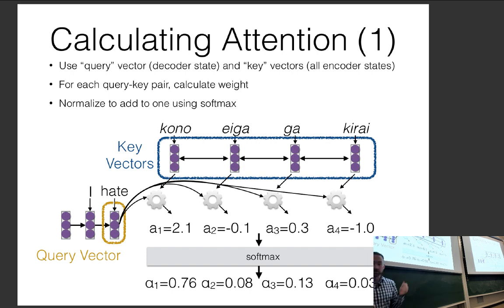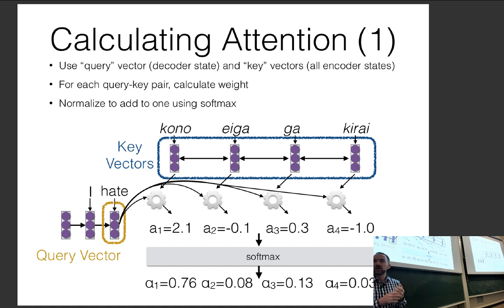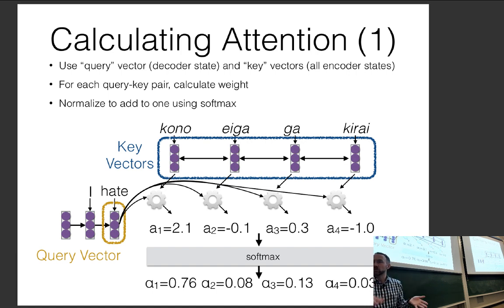The softmax essentially picks a single word — or a mixture of a very small number of words — which makes sense for machine translation where generating a word requires looking at only one or a few source words. This inductive bias for machine translation is why softmax is the standard choice, though other normalizations could work for other tasks.